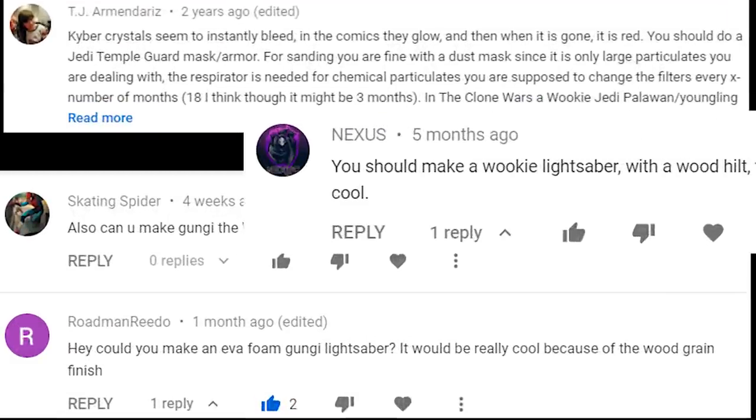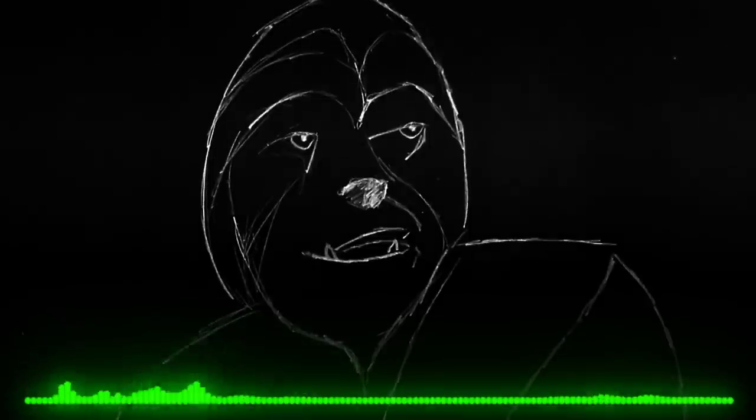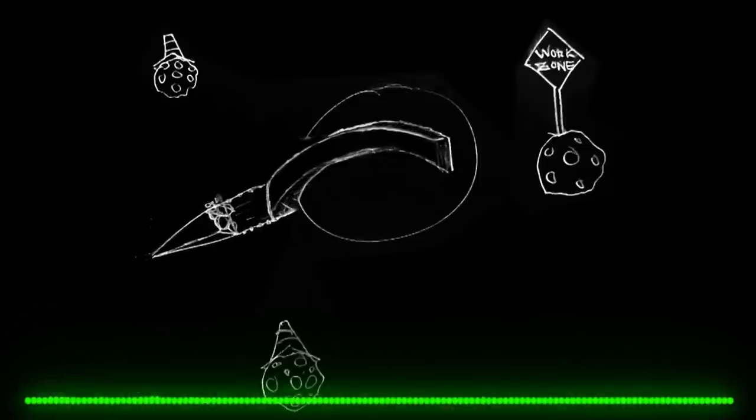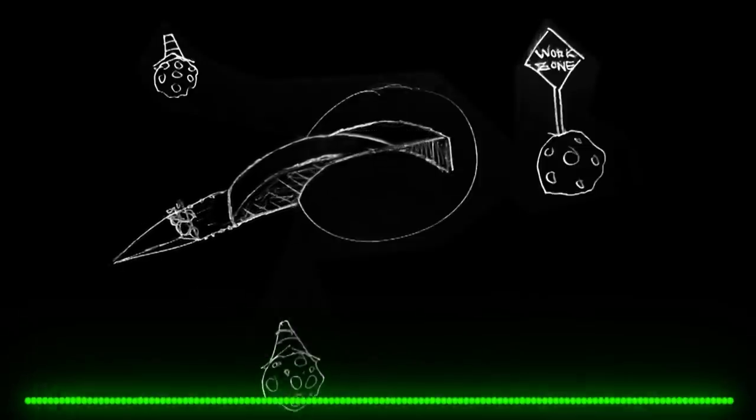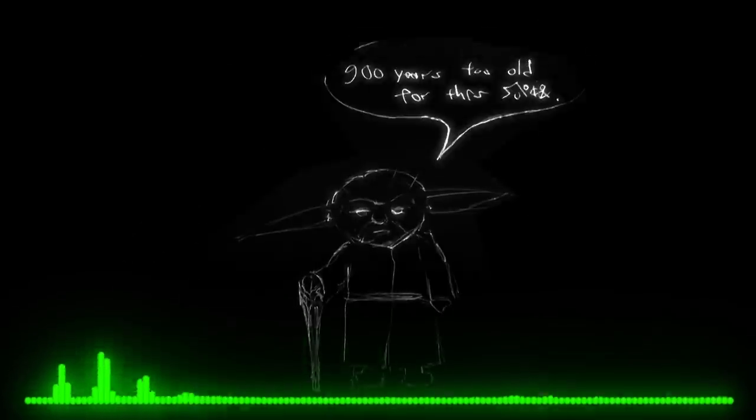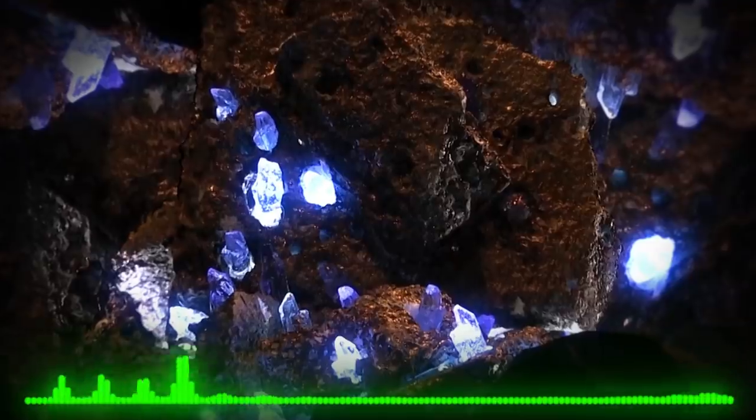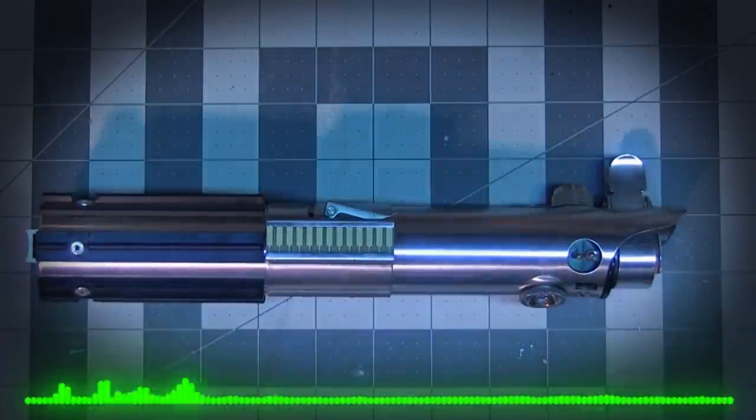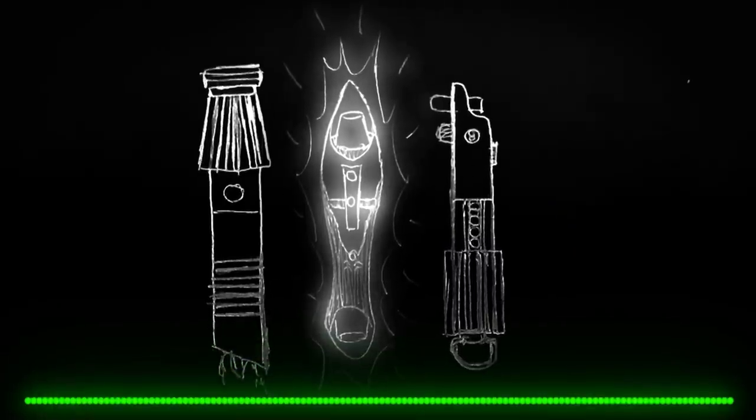I've gotten a lot of requests for Clone Wars lightsabers, so today I'm going to make Gungie's lightsaber. Gungie was a Wookiee Jedi Padawan, being among the top of his class. He was sent to Ilum with four of his fellow Jedi younglings. While there, the Padawans were instructed by Jedi Master Yoda to enter a crystal cave to find their Kyber crystals, which were necessary for the construction of their lightsabers. He chose to construct his lightsaber with a wooden grip, thus making it distinct from all others.